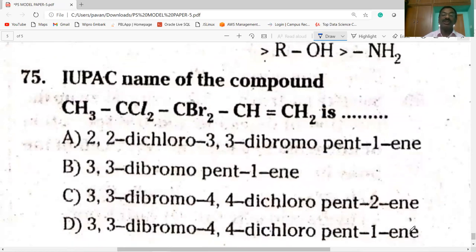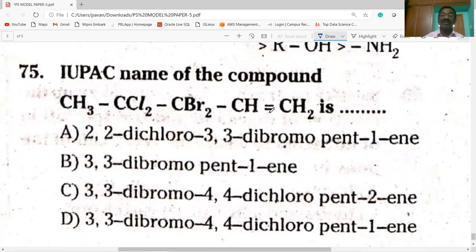Next question on the screen. IUPAC name of the compound. Here there is a double bond, so priority will be given to the double bond. Numbering is done from right: 1, 2, 3, 4, 5. First we have to write the substituents in the name. Substituent bromine and chlorine. Bromine on third carbon, chlorine on fourth carbon. B comes before C in alphabetical order. So 3,3-dibromo-4,4-dichloro-pent-1-ene. Option D: 3,3-dibromo-4,4-dichloro-pent-1-ene.